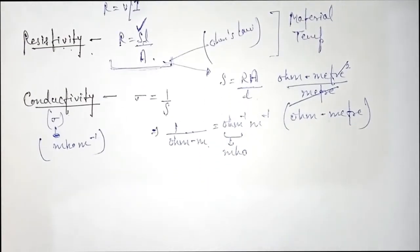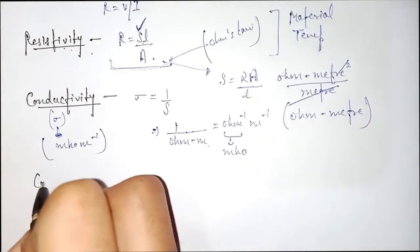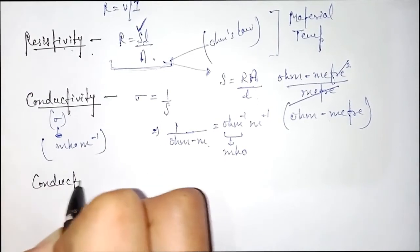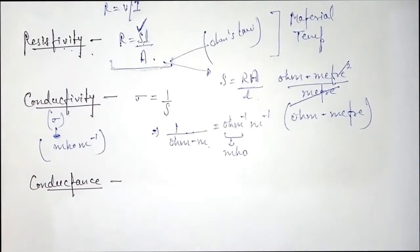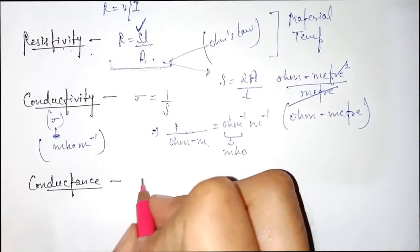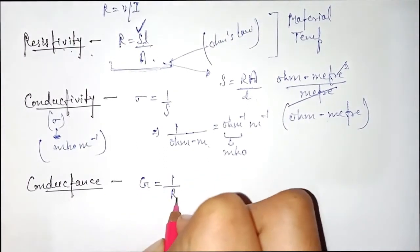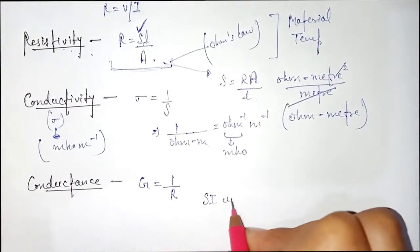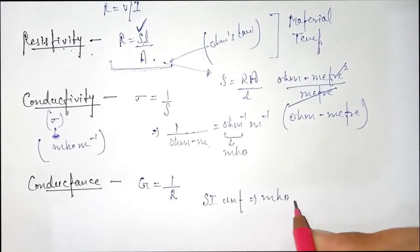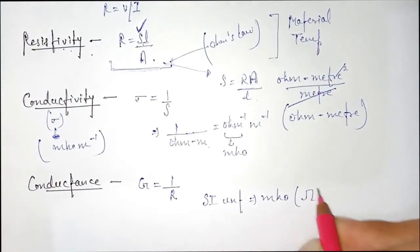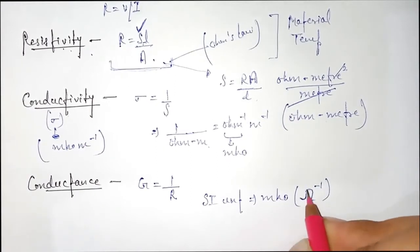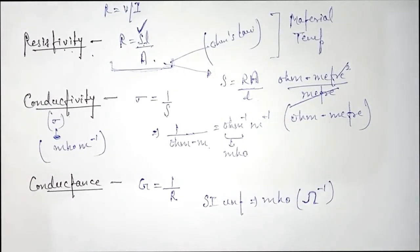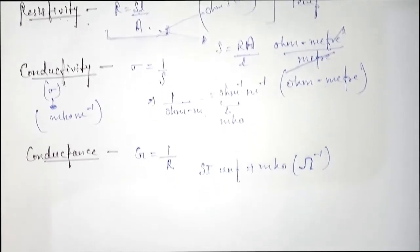Last one is conductance. Conductance is denoted by G and it is the reciprocal of resistance. Its unit is mho, and the symbol is inverted omega.